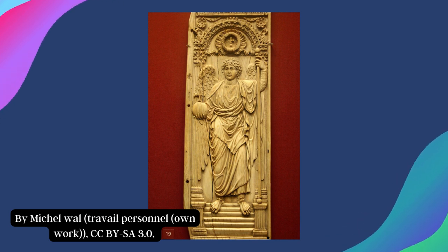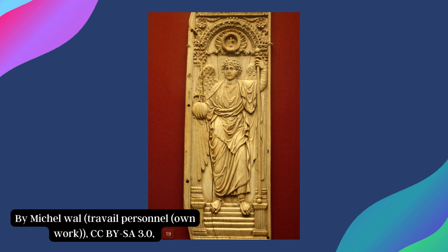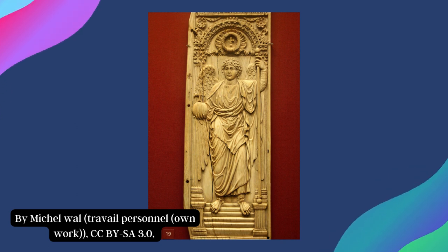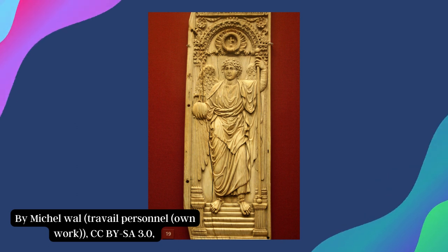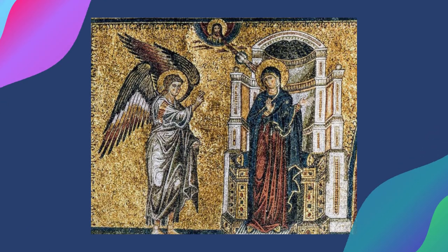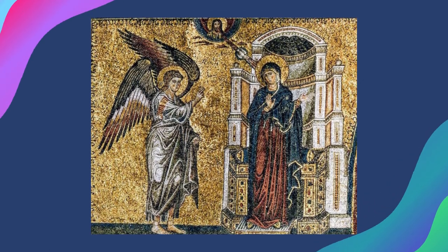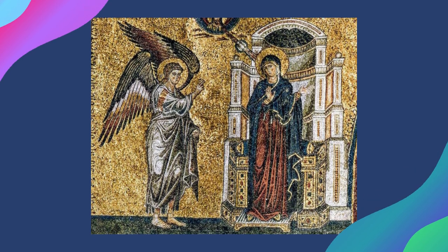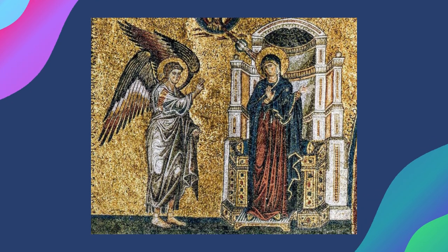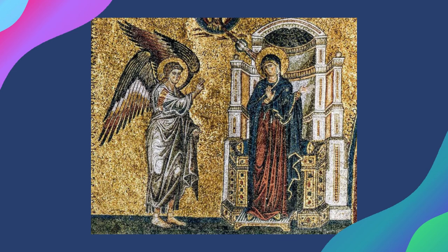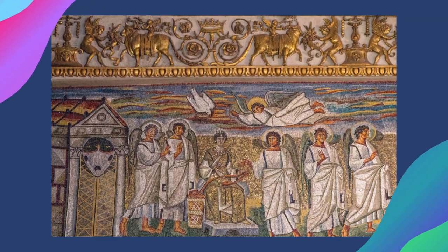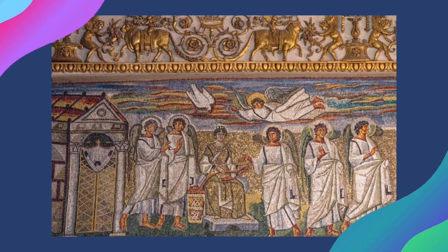During the 5th century, there was a change in how angels were depicted in Christian art. In the Annunciation scene on St. Mary Major's triumphal arch, the angel Gabriel is shown flying towards Mary, who is surrounded by other winged angels. Angels became popular in Christian art, often depicted as attendants to Jesus and the Virgin Mary. Examples can be seen in the 6th century mosaics at the churches of St. Mary Major's and St. Apollinare Nuovo.